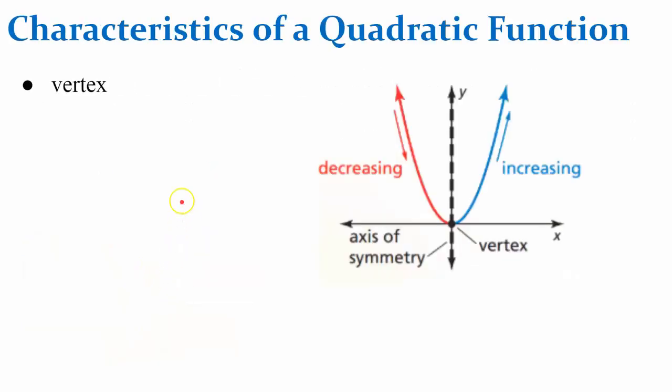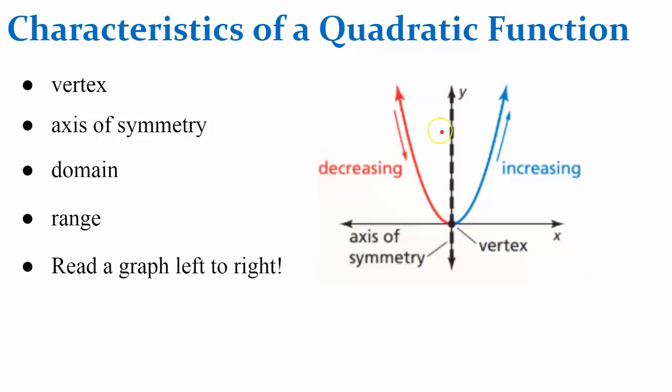So let's just review characteristics of a quadratic function. They all have a vertex, an axis of symmetry. You can describe the domain as the set of inputs, the range as the set of outputs, and read the graph left to right to determine the decreasing half and the increasing half.